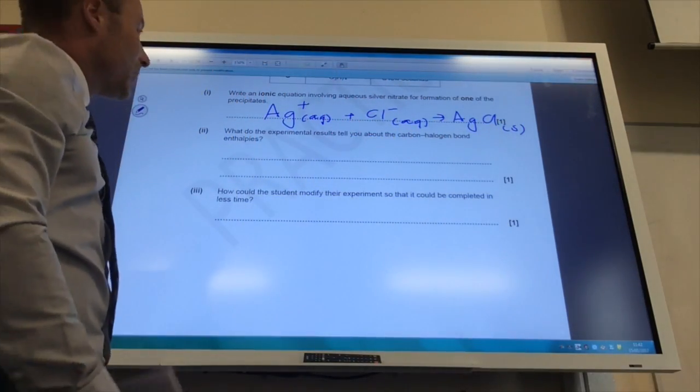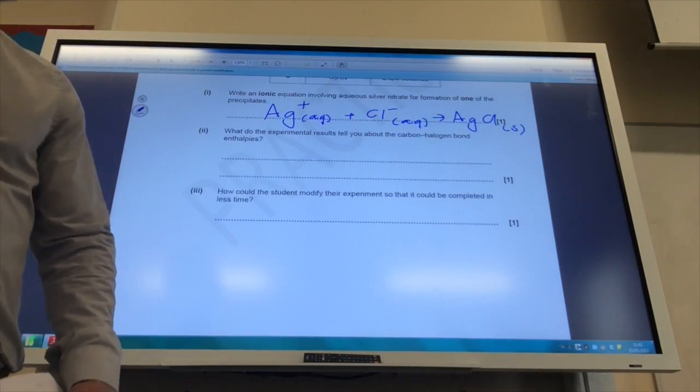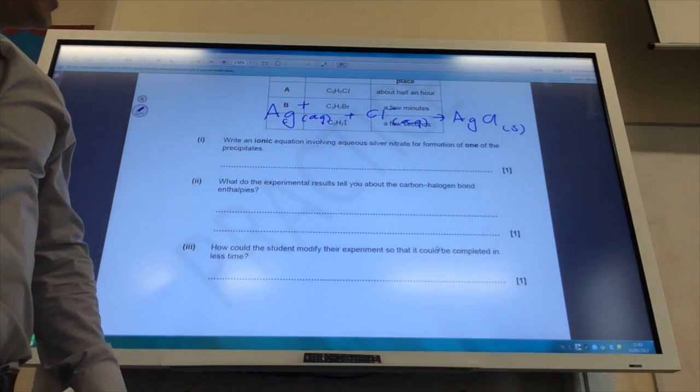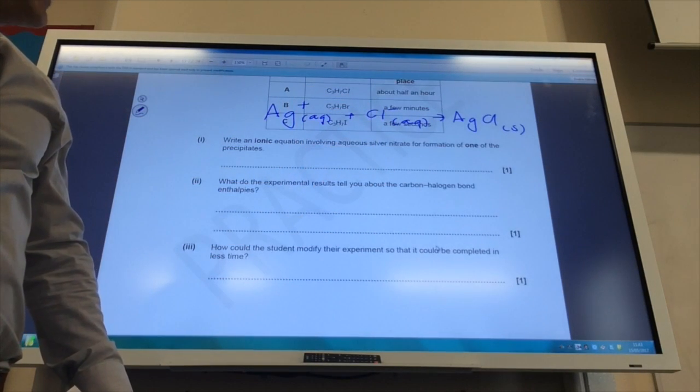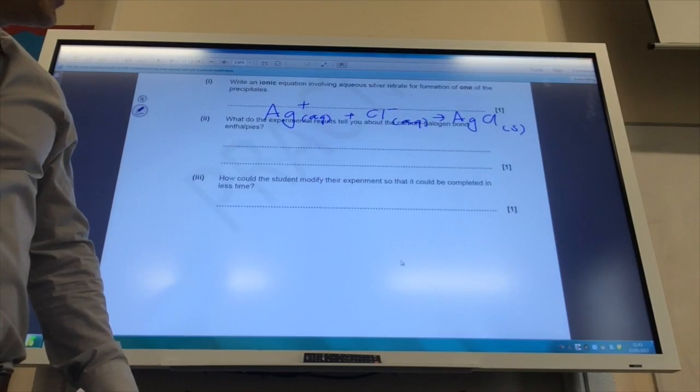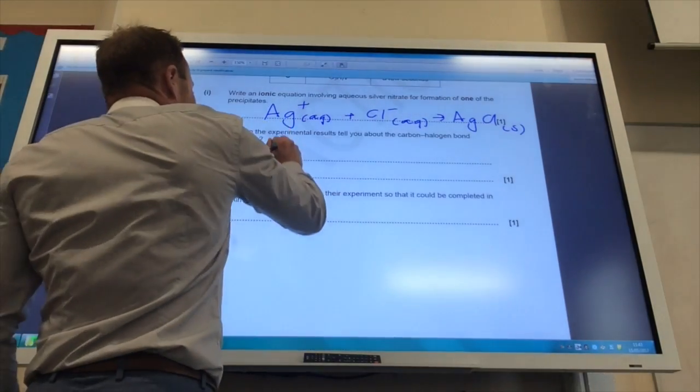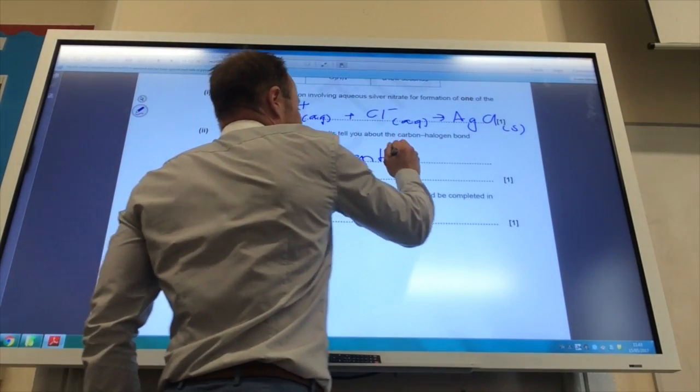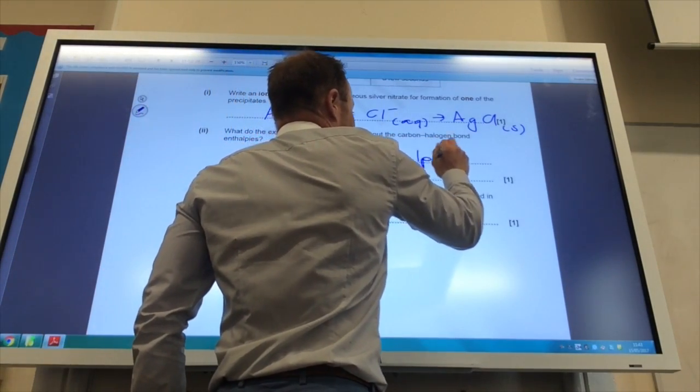What do the experimental results tell you about the carbon-halogen bond enthalpies? Well, you notice that the chlorohalogen alkane takes half an hour, whereas the iodo only takes a few seconds. It tells me that the bond enthalpy decreases down the group.